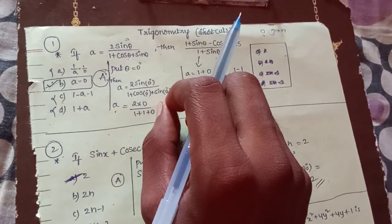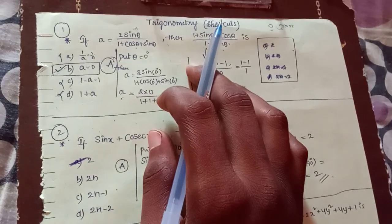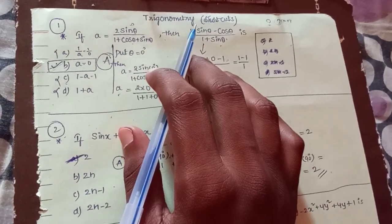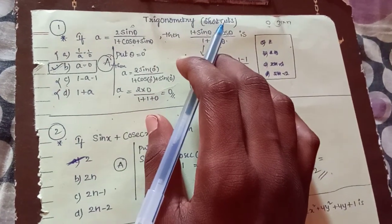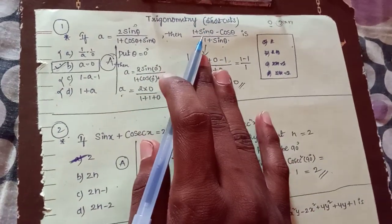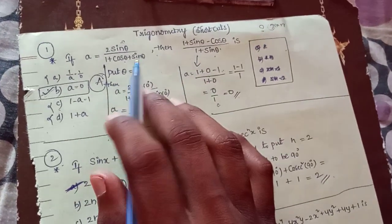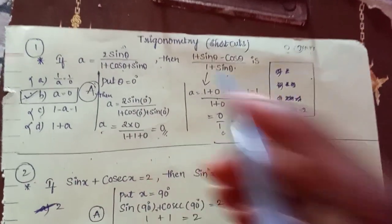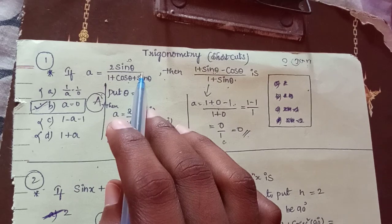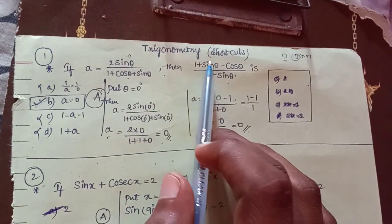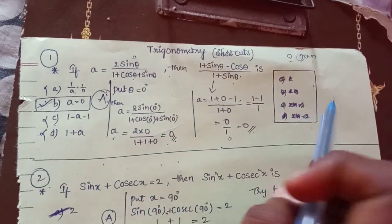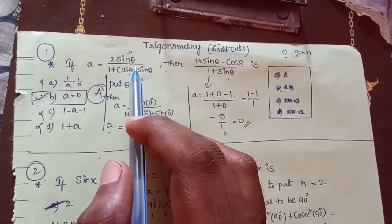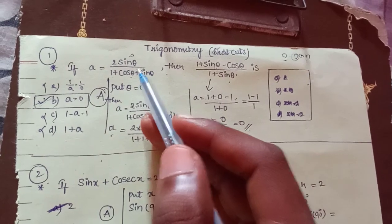This video is going to be a trigonometric shortcut, so stick to the playlist. This method is either 0 and 1 — you can see this method of 0 and 1. You can find out how to solve questions using simple tricks with shortcuts. Here, the theta value is either 0 or 1.